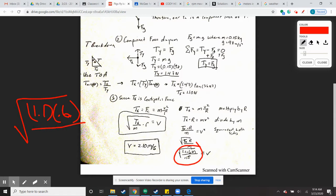You're going to divide by the mass, which was 0.15. That is your equation. You should end up getting about 2.1 meters per second.